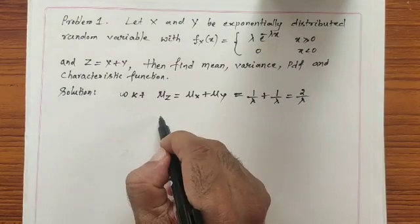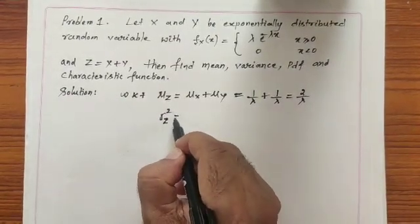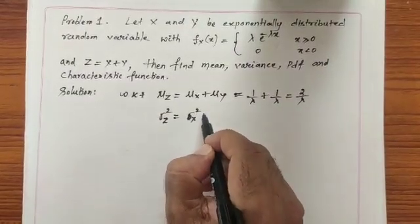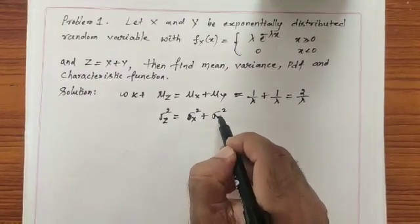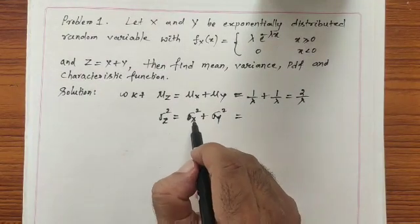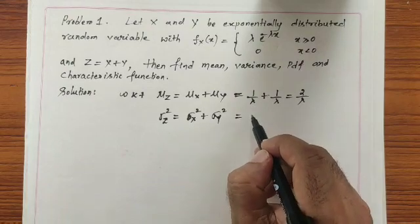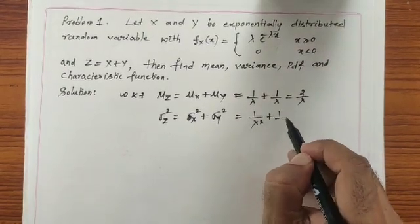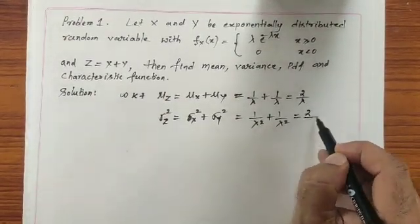Similarly, we can find the variance. The variance of z is given by variance of x plus variance of y. The variance of a single exponential random variable, found in the previous chapter, is 1/λ², so variance of z equals 1/λ² + 1/λ² = 2/λ².